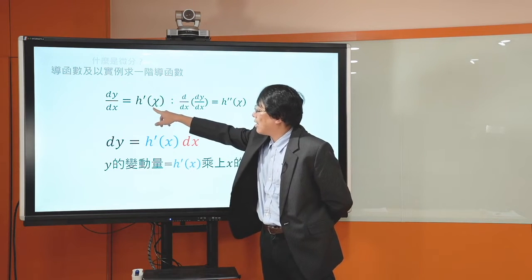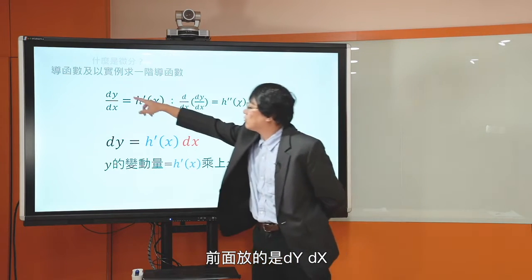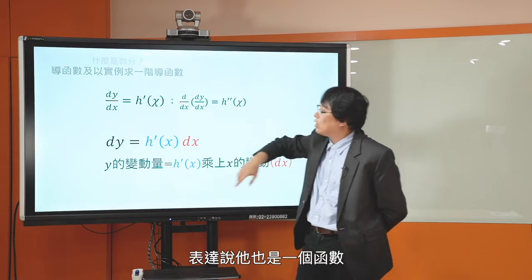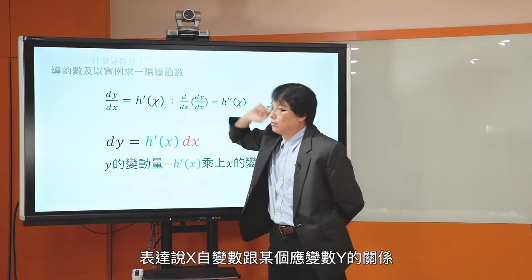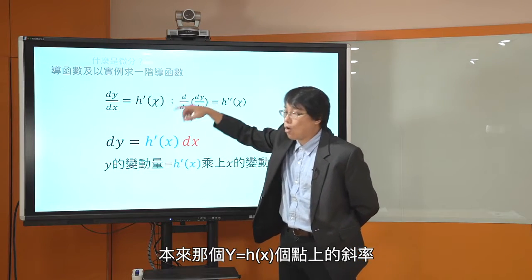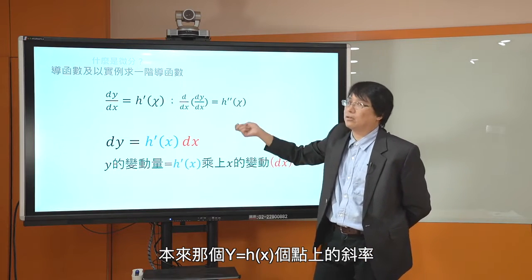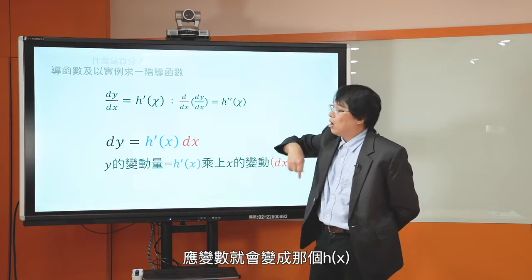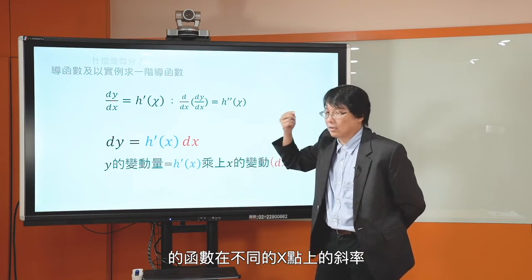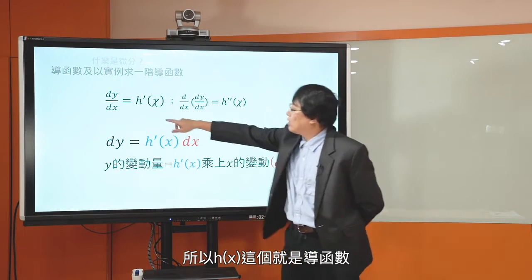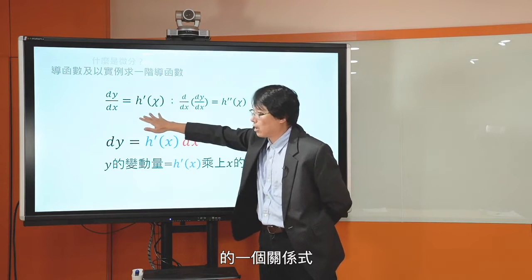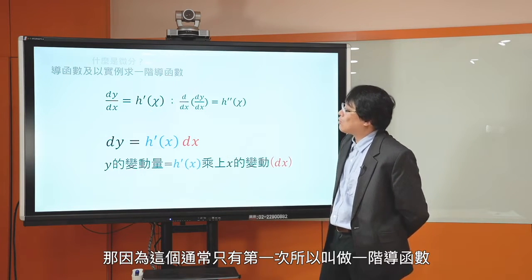举例来说，我们有一个函数Y等于H of X，这个函数描述X跟Y的关系。它的导函数通常我们会用H'来表达，前面放的是dy/dx，表示这是微分。H'也是一个函数，表达X自变数跟某个应变数的关系，这时候应变数变成的是本来那个H of X在不同X点上的斜率。